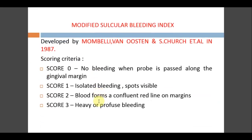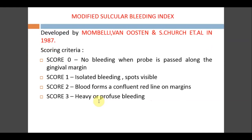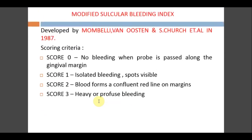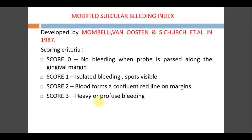The Modified Sulcus Bleeding Index was developed by Mazza and coauthors in 1981. Scoring: 0 = no bleeding; 1 = isolated bleeding spots visible when probe is passed along the gingival margin; 2 = blood forms a confluent red line on the margin; 3 = heavy or profuse bleeding. That concludes this session on bleeding indices and gingival indices. A new session will follow.